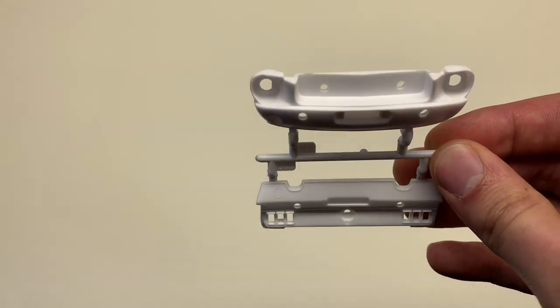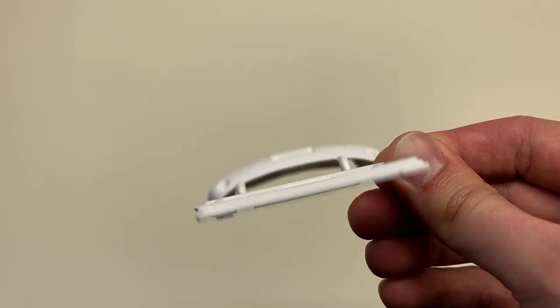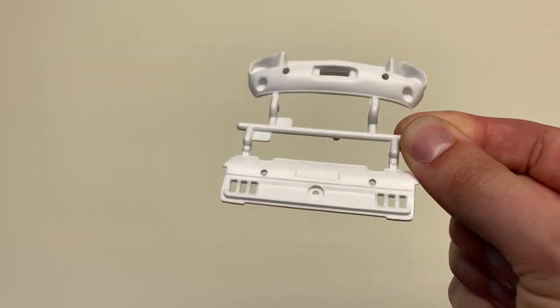The front and rear for the body come molded separately, as this kit is brought out in multiple versions, if I'm correct, and that makes it a lot easier to swap these out.